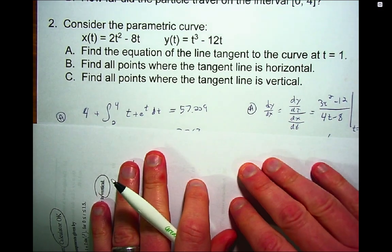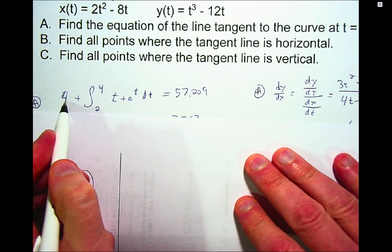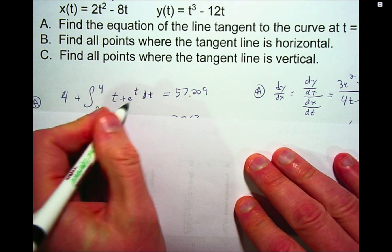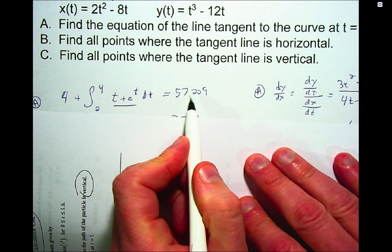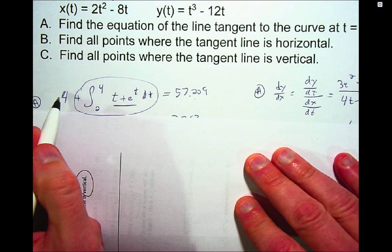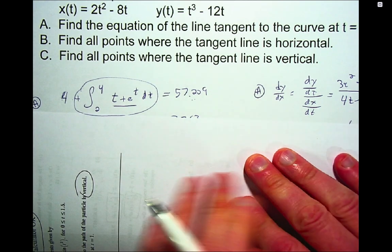And so for the x coordinate, we're just going to figure out, okay, it started at the x coordinate of 4, and then we're going to integrate the x velocity over the interval from 2 to 4. And we do this all in our calculator, and this will give me the net change in the x position, add it to where I started, and I end up at this x coordinate, 57.209.